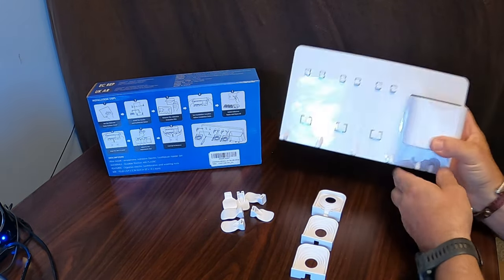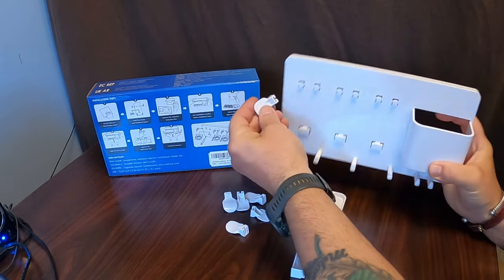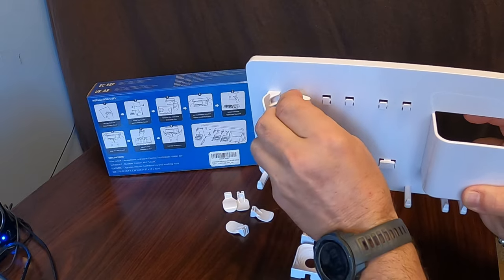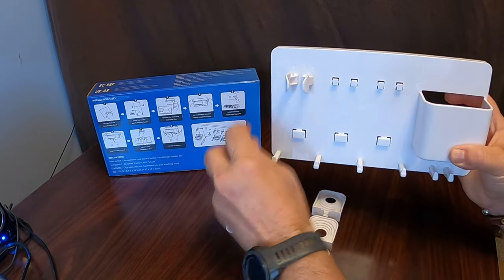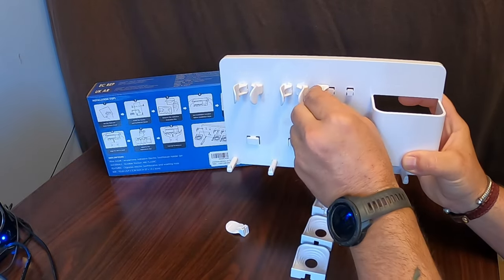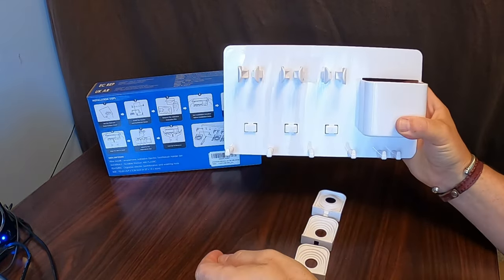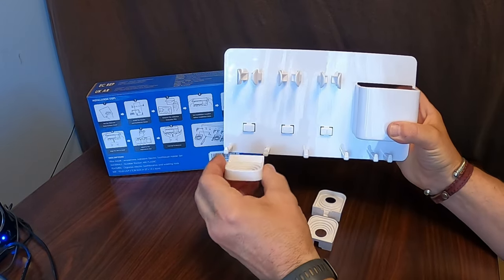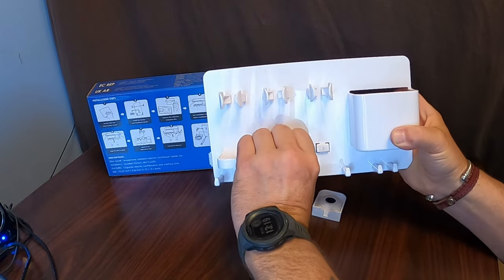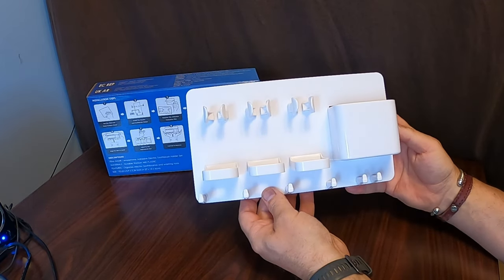So the first thing we do is install the clips here for your toothbrushes. They simply slide on the end, one on either side. Snap straight on. And then the bottom plates. Same thing, just slide right on. There we go, it's all ready to go.